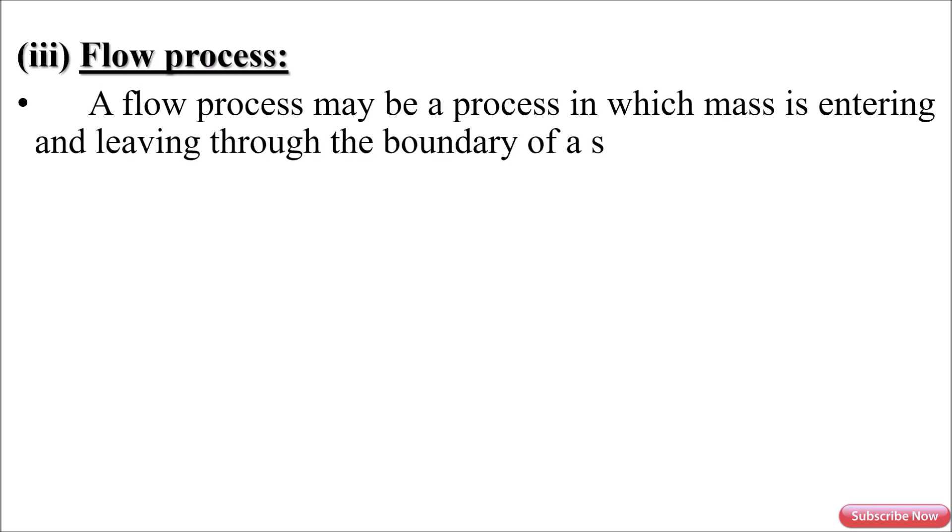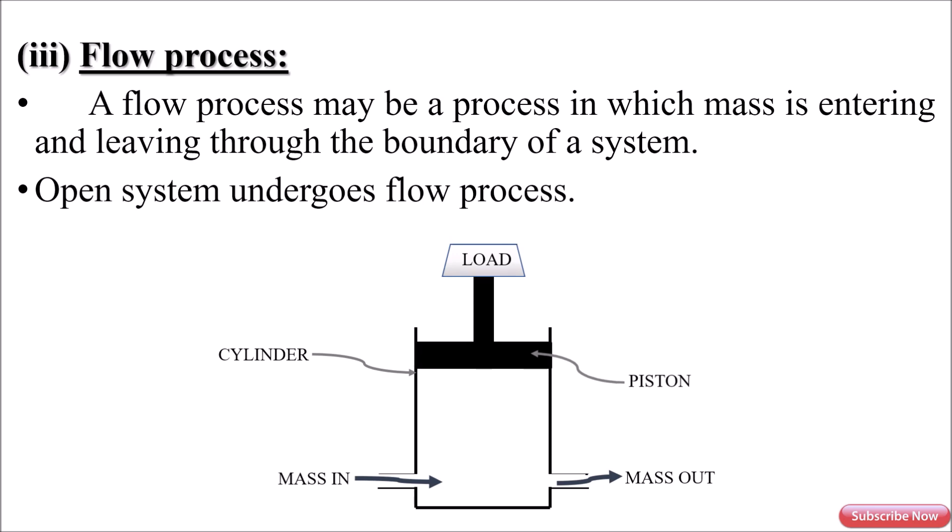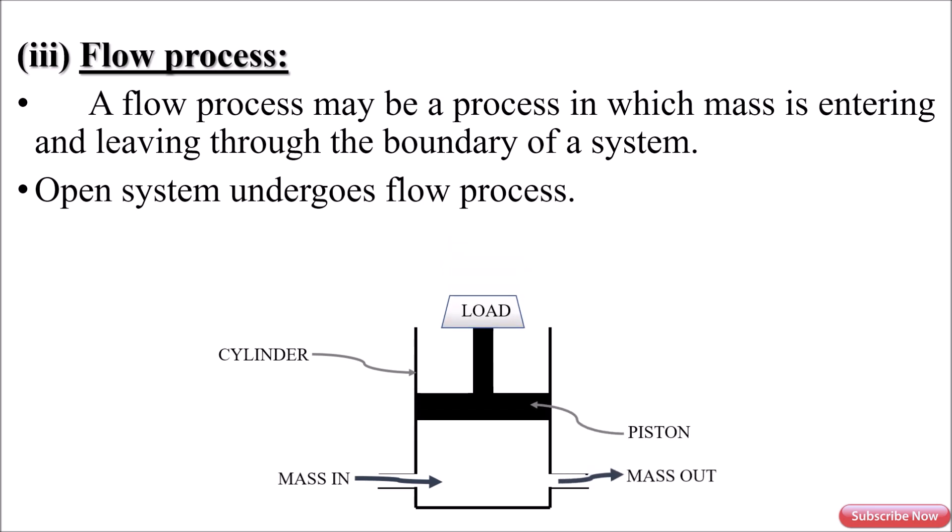Next type of process is flow process. A flow process may be a process in which mass is entering and leaving through the boundary of a system. For example, open system undergoes flow process. As shown in this diagram, when mass gets into the cylinder, it will come out through the cylinder.